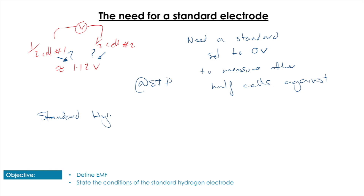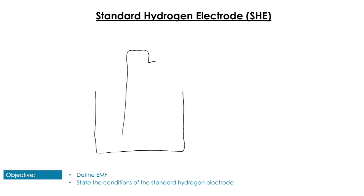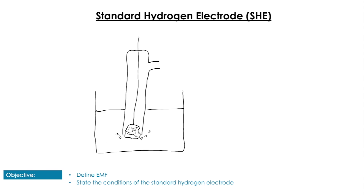Once we measure half-cells at STP, we can theoretically predict what any other cell may produce. We call this the Standard Hydrogen Electrode, or SHE. You have to be able to draw this and know all of its components. Because hydrogen is a gas, we need a way to provide it without losing it to the atmosphere, so we use an inverted test tube with an entry point at the side, and a platinum wire with a platinum electrode. H₂ gas is provided at one bar, which is one atmosphere.